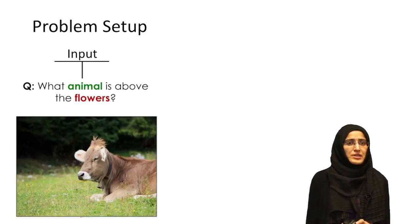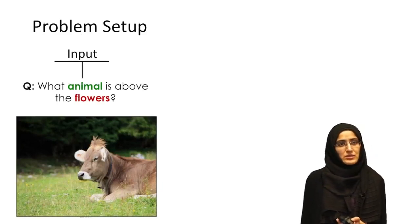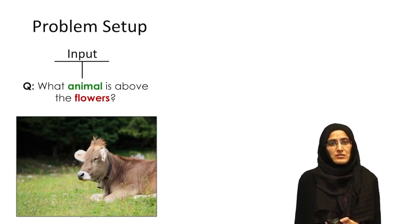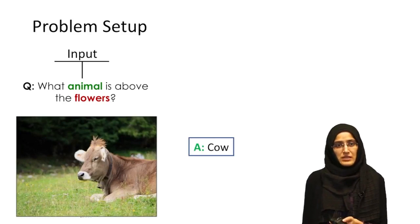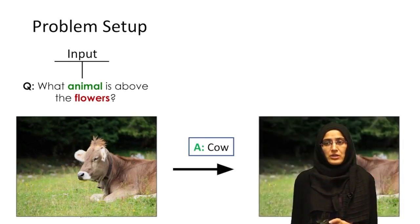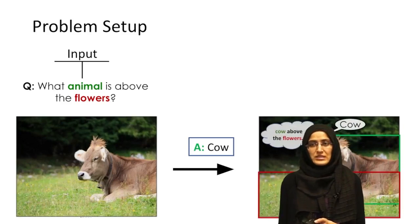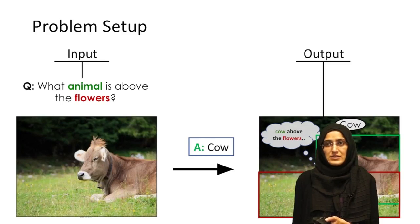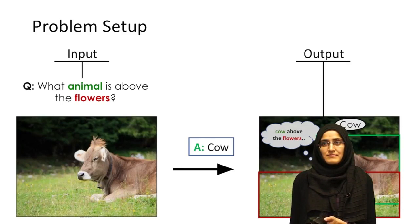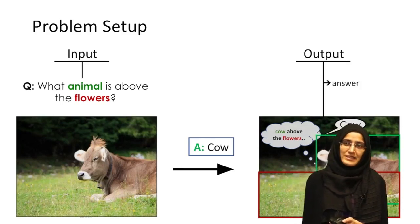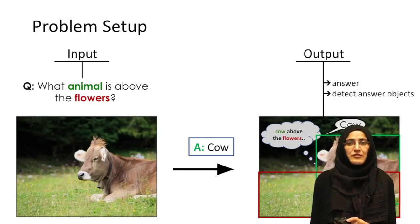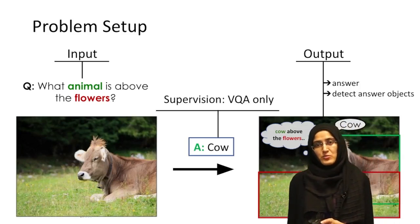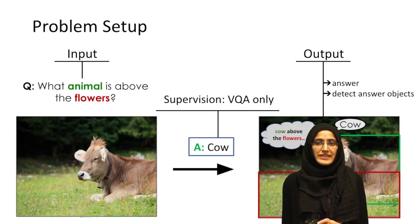Here is the problem setup. We are given an image and a question as input — for instance, what animal is above the flowers? A traditional VQA system will answer: cow. However, we not only want to answer the question, we also want to detect and localize the objects — in this case, the cow and the flowers. The output for our system is the answer as well as the detected bounding boxes. We want to solve this task using only VQA supervision, with no bounding boxes for training.